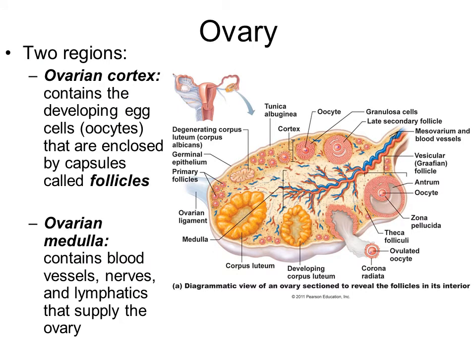Looking at the two regions of the ovary: there's the ovarian cortex and the ovarian medulla. The cortex is the outer area; the medulla is internal. The ovarian cortex contains developing oocytes enclosed in capsules called follicles, which are given names of primary, secondary, and vesicular follicles as development proceeds. In the ovarian medulla, you have blood vessels, nerves, and lymphatic vessels that serve the ovary.